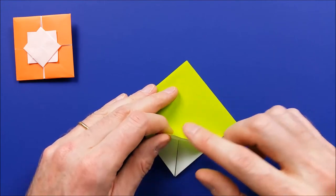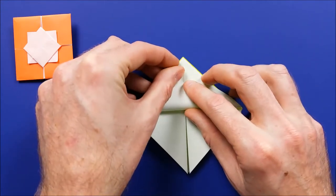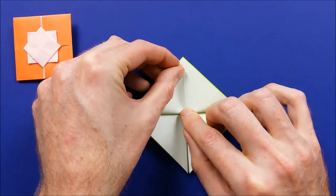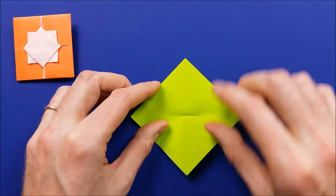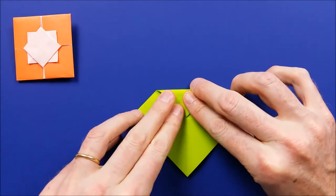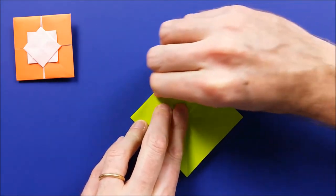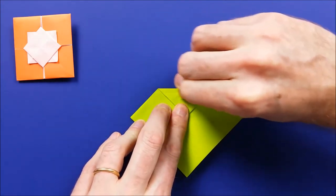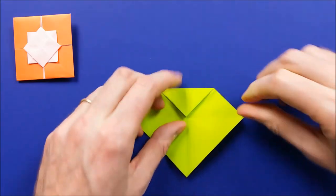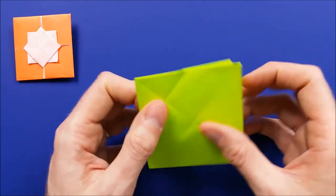Take the bottom tip and put it to the top tip, but just make a small pinch here. Then fold the top tip to the pinch. And you want to mark this fold very well. Mark the top tip, but just make a small pinch here. Then unfold. And unfold again.